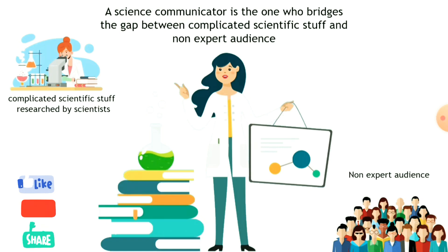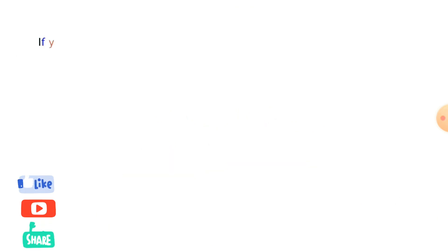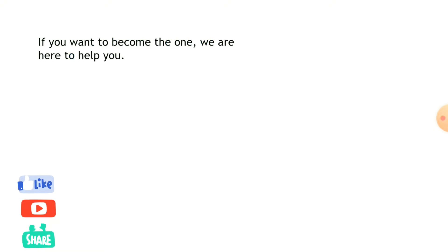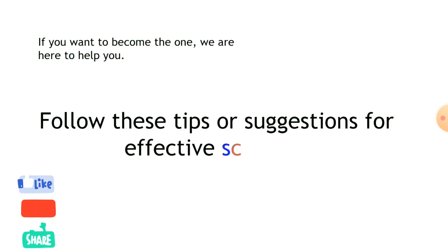A science communicator is the one who bridges the gap between complicated scientific stuff and a non-expert audience. They educate and raise awareness to the people about science-related things. If you want to become one, we are here to help you. Follow these tips or suggestions for effective science communication.